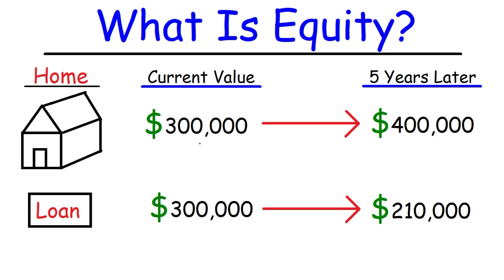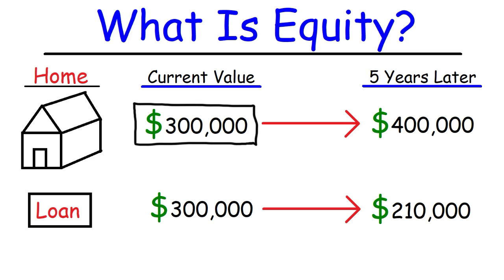So let's say you decide to buy a house for $300,000. We're going to keep this discussion simple — we're not going to go into all of the details and the fees of owning a home. But let's say that's the current value of your home, and you took out a loan or a mortgage for $300,000 to buy the home.